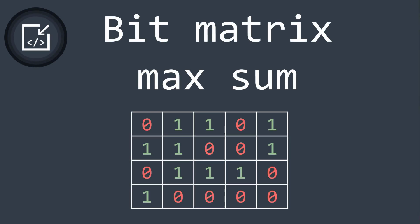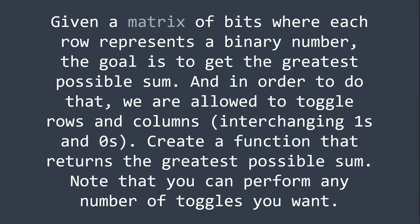Welcome to this new Inside Code video where we will see the bit matrix maximum problem. So what does the problem say? It says, given a matrix of bits where each row represents a binary number, the goal is to get the greatest possible sum. And in order to do that, we are allowed to toggle rows and columns, interchanging ones and zeros. Create a function that returns the greatest possible sum. Note that you can perform any number of toggles you want.